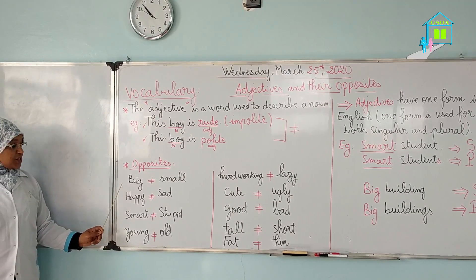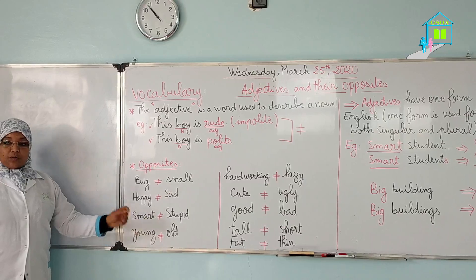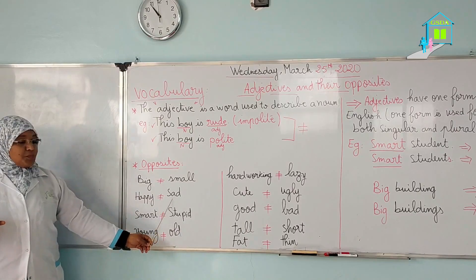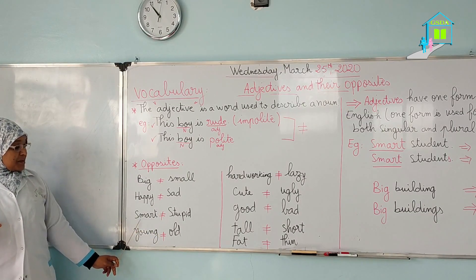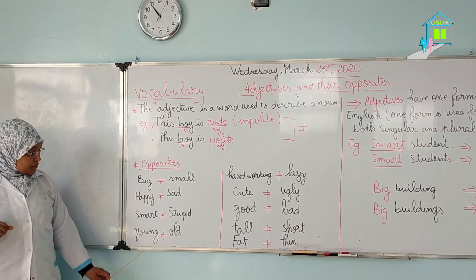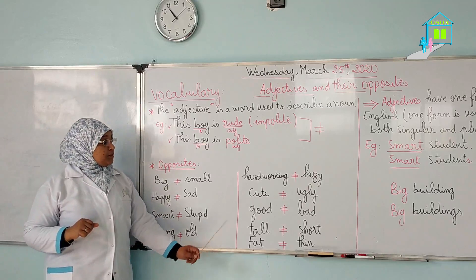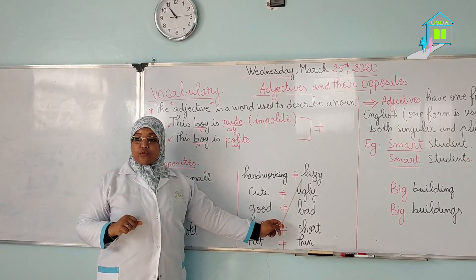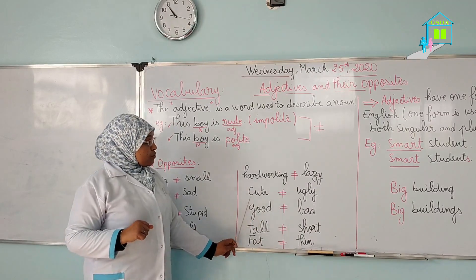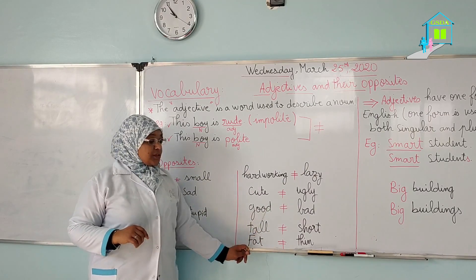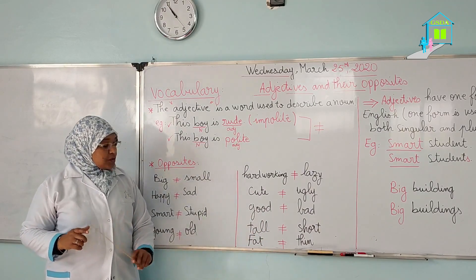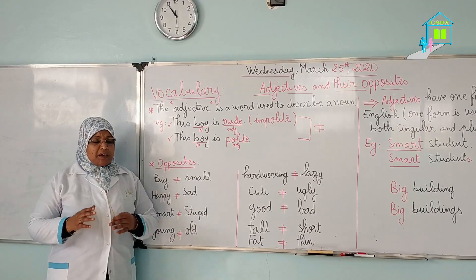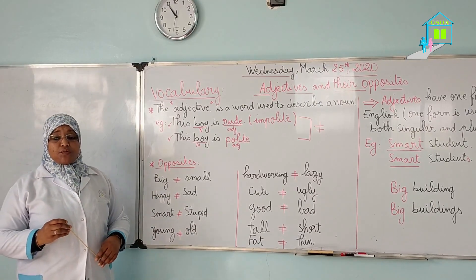The adjective big is the opposite of small. Happy — the opposite of happy is sad. Smart is the opposite of stupid, and young is the opposite of old. Hardworking — for example, a hardworking student is the opposite of a lazy student. Cute is the opposite of ugly. Good is the opposite of bad. Tall is the opposite of short. We have many different adjectives with their opposites.